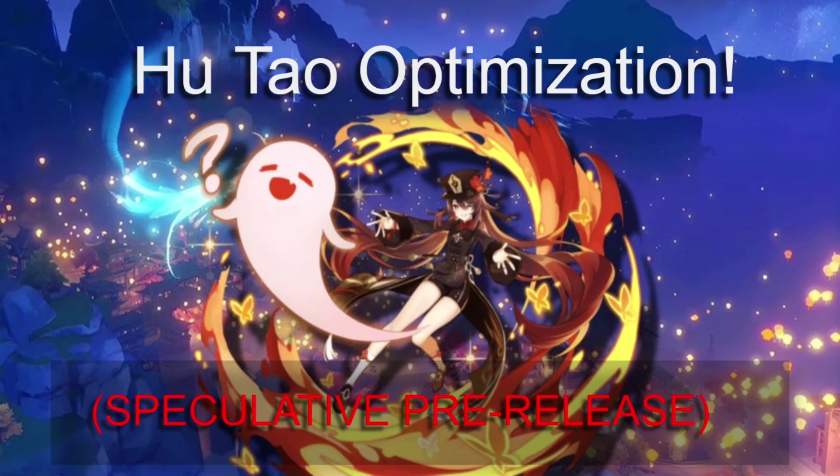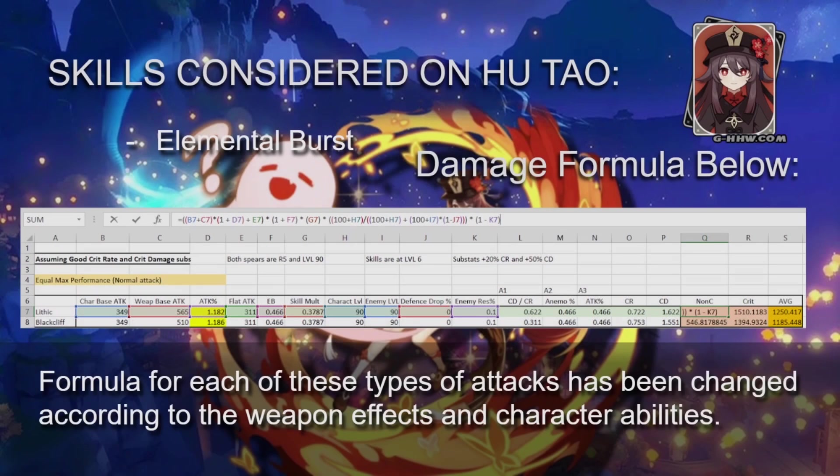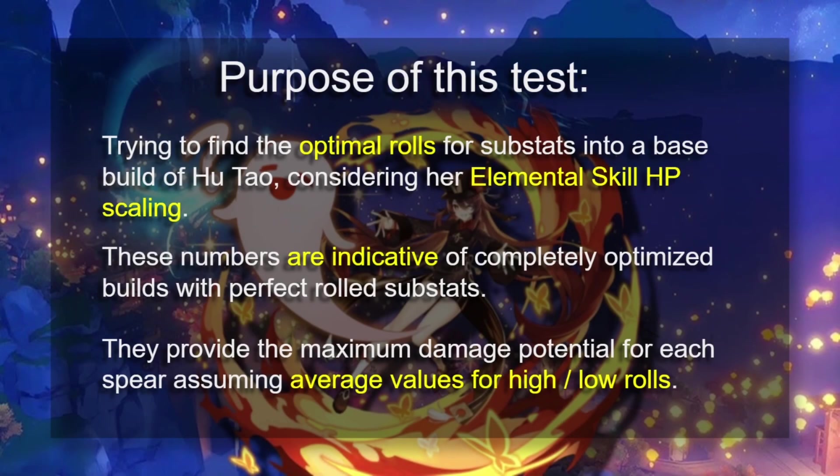So in this video, we're going to go through the optimization, and I'm going to go through the math as fast as I can, but still try to be very detailed, because I don't want everyone to sit here way too long. We're using the same formula as before, considering it on Hu Tao, and we're using it for her elemental burst, which at level 9 has a multiplier of about 600%.